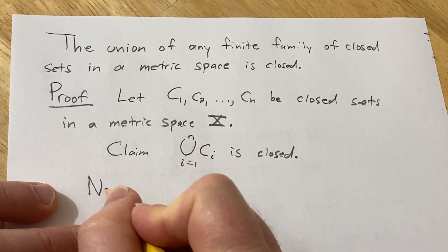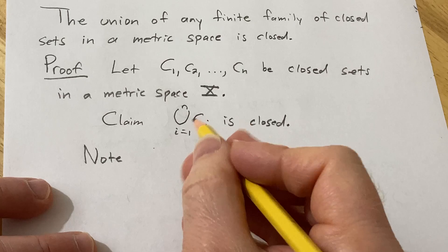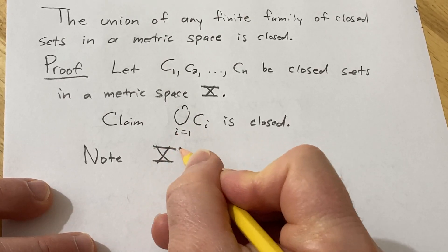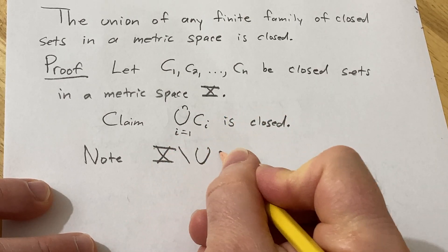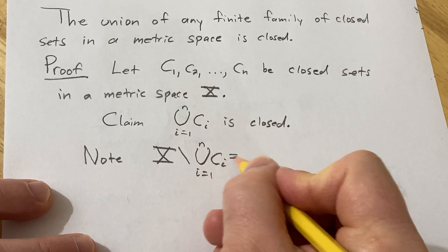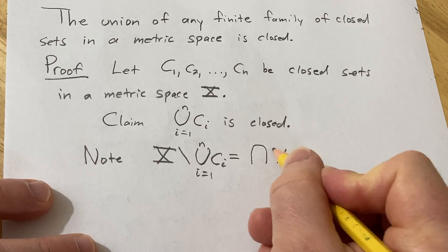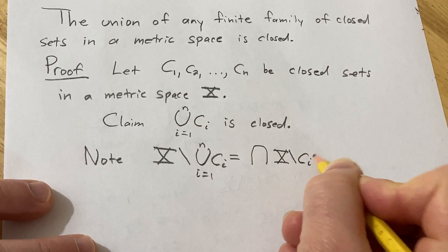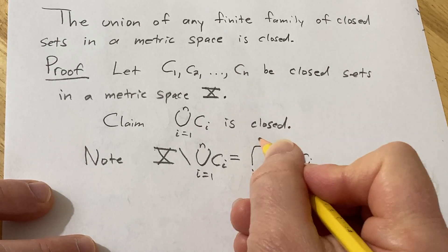So note, if we look at X set minus the union of the C sub i's as i runs from 1 to n, this is equal to the intersection of X set minus C sub i as i runs from 1 to n.